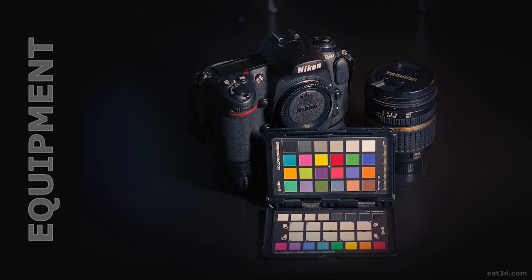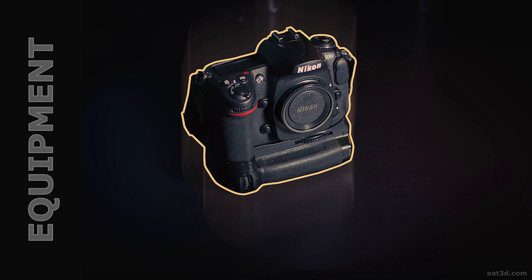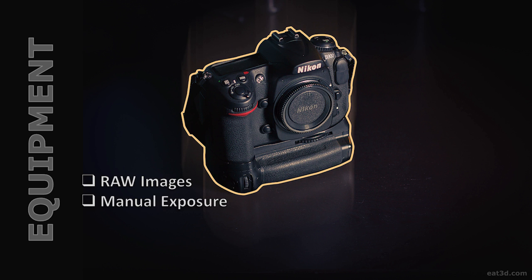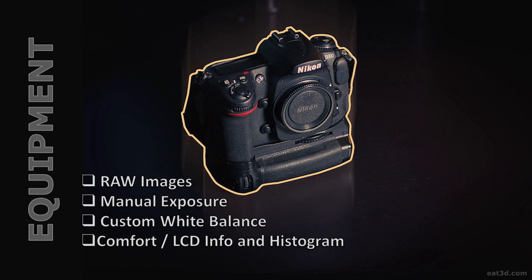Let's take a look at what type of equipment we need to start shooting. When it comes to a camera body, most entry level DSLRs will do, but we need the ability to shoot raw images, manual exposure control — I generally only shoot manual — and ideally the ability to shoot custom white balance, which is a nice-to-have for a bit more accuracy. The most important thing when shopping for a camera is comfort — you'll be holding it and looking for a lot of buttons — so you want it comfortable in your hand. A good LCD info readout with histogram and easy access to it is also very important, because we'll refer to that a lot.